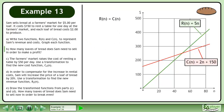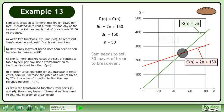Begin by setting the revenue function equal to the cost function. This gives us the equation 5n equals 2n plus 150. Subtract 2n from each side of the equation to get 3n equals 150. Divide both sides by 3 to get n equals 50. Sam needs to sell 50 loaves of bread to break even.